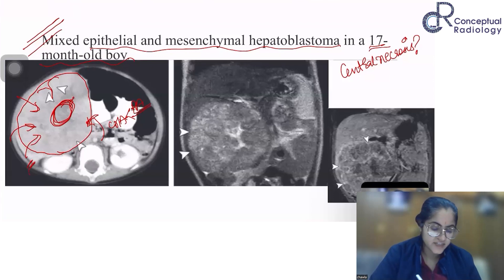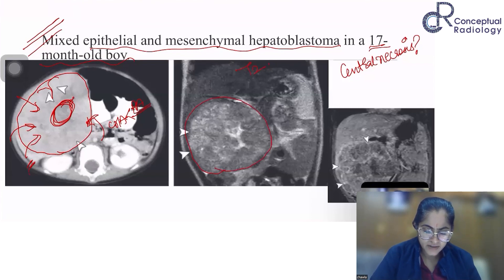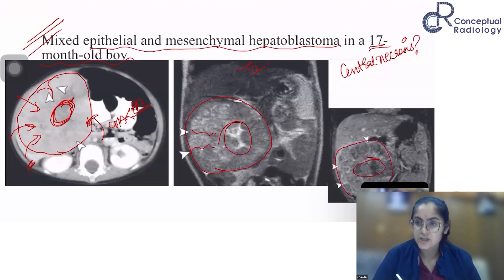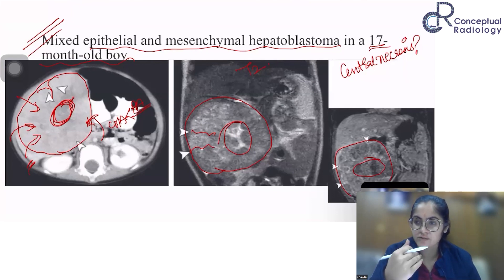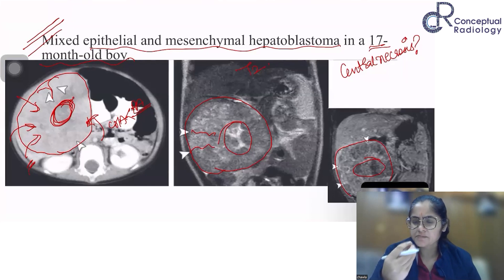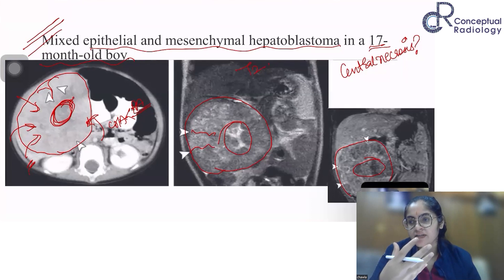On T2-weighted MRI, the lesion is heterogeneously hyperintense with hypointense septa and central necrosis. On post-contrast sequences, the septa enhance while the central necrotic portion does not. If asked about classical imaging features on CT or MRI, look for arterial phase enhancement and venous phase washout to suggest hepatoblastoma in a child. However, MRI morphology can vary — lesions are mostly T2 hyperintense, with hyperintensity secondary to hemorrhage or foci of calcification.